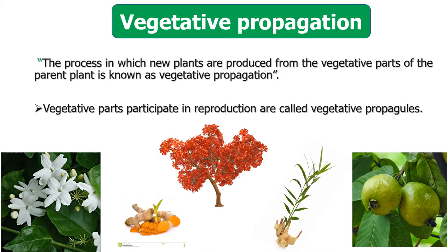The stem, roots, and leaves are the plant parts that help in propagation vegetatively. Vegetative parts that participate in reproduction are called vegetative propagules.